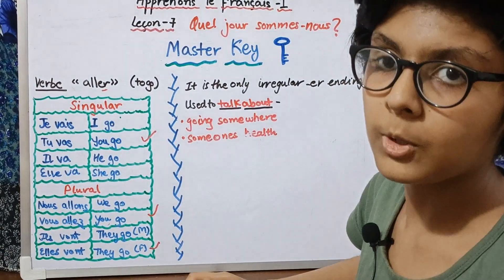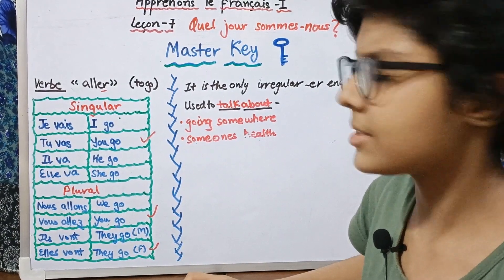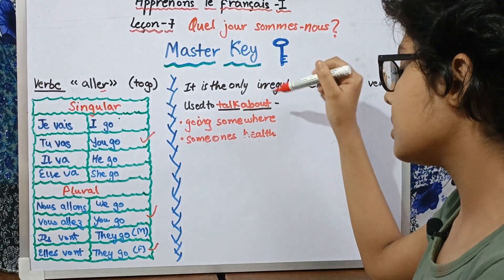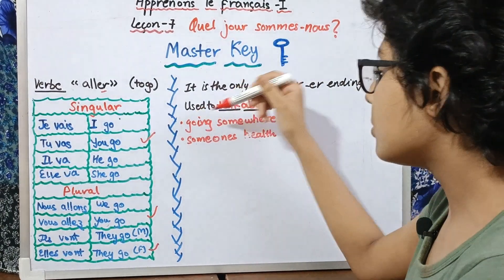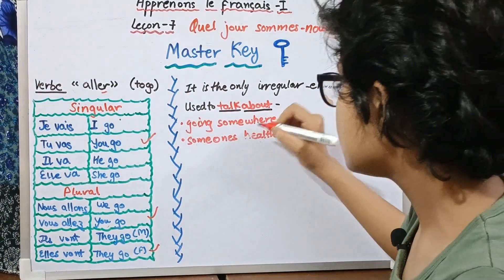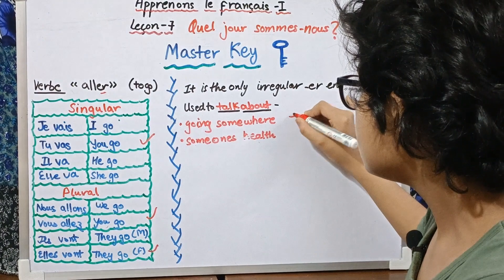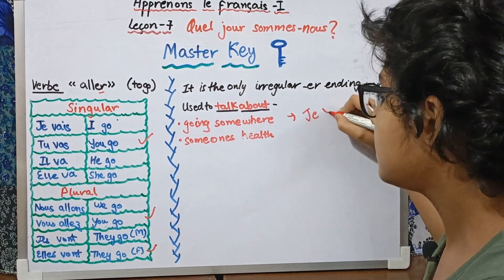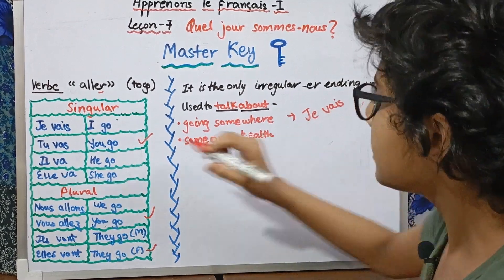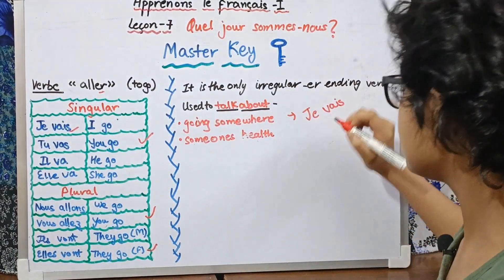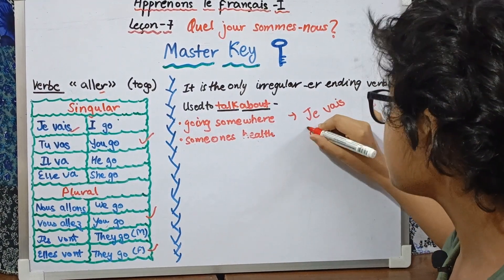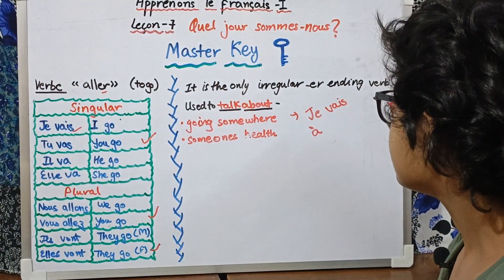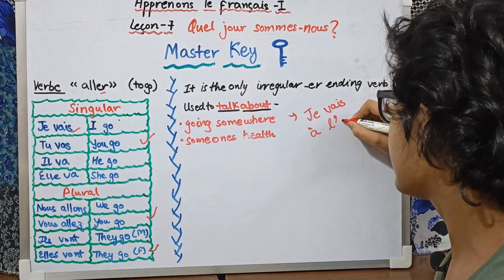That was all for the aller verb conjugation. Now let us see its uses. The first use is to talk about going somewhere. For example: je vais — 'a' means 'to' — je vais à l'école, which means 'I go to school.'